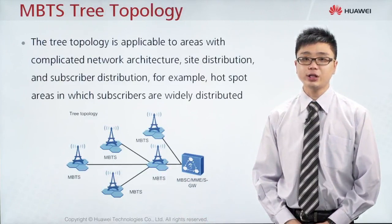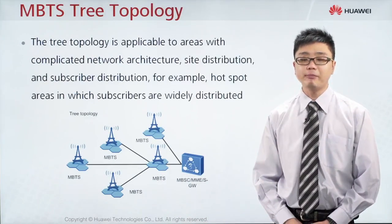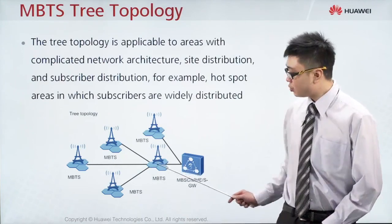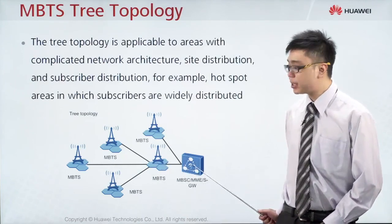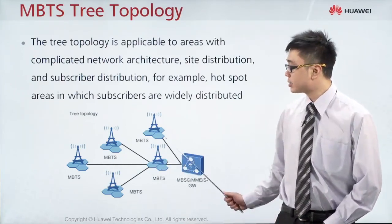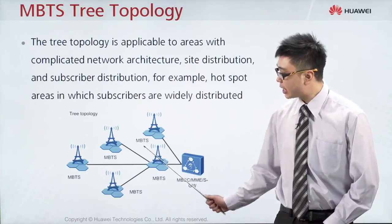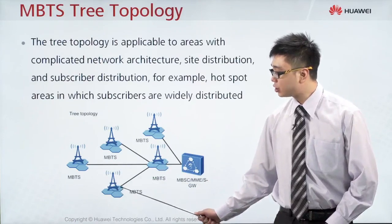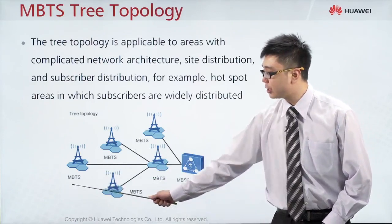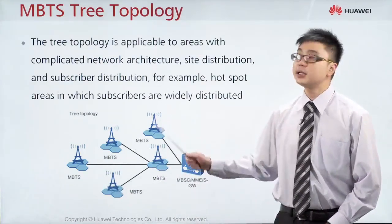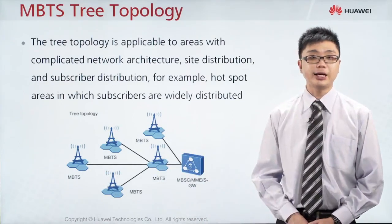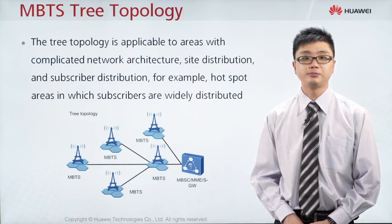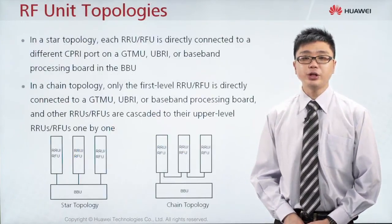We also have another type of connection known as tree topology, which is a combination of both star and chain. Notice that here you have a star connection in which one BSC is connected to two BTS, and from the BTS it spreads further — another star connection, and from there it connects through a chain connection. So tree topology is like tree branches, consisting of both star and chain together.